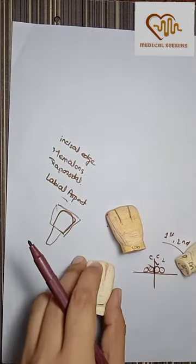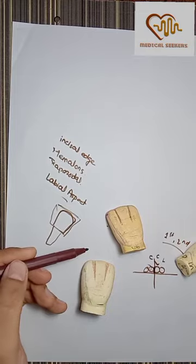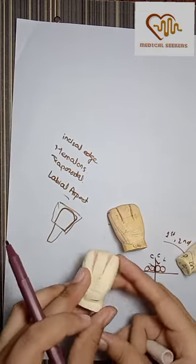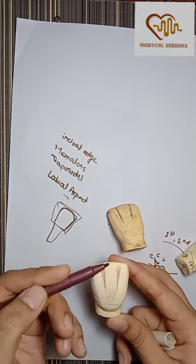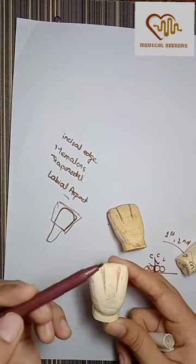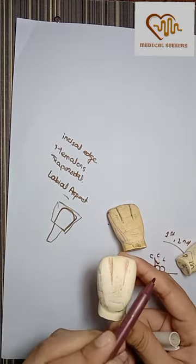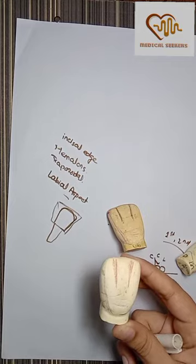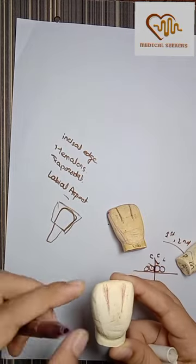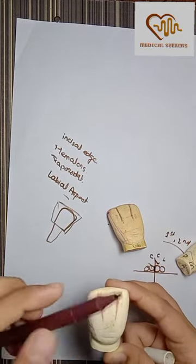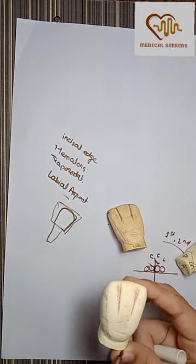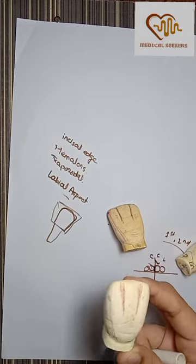Now the crown is incisal cervical. The cervical is wider and mesiodistally wider. The cervical is longer and mesiodistally wider. The dimension is equal to the same. The mesiodistal and cervical are the same.